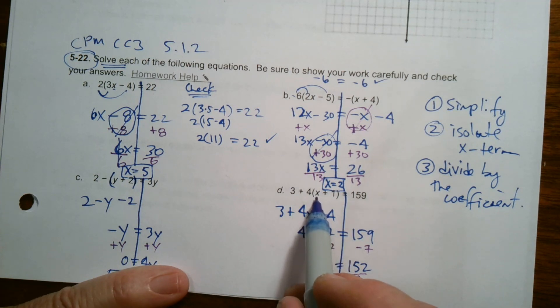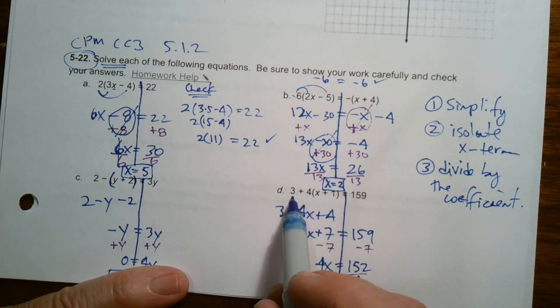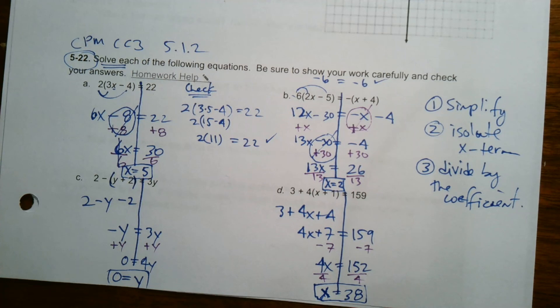And if I wanted to check it again, I could put 38 into the X. 38 plus one is 39, multiply through four times 39, you're going to get 156. And then 156 plus three is 159, so it checks out. Alright, there we go.